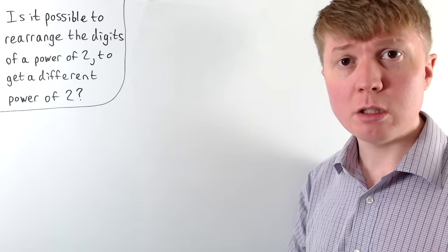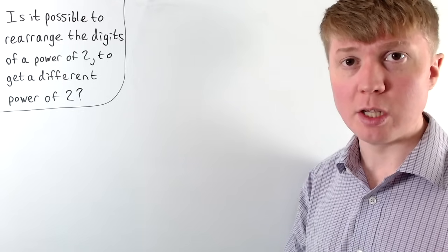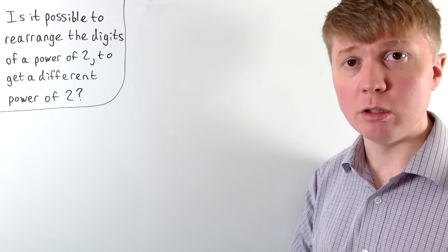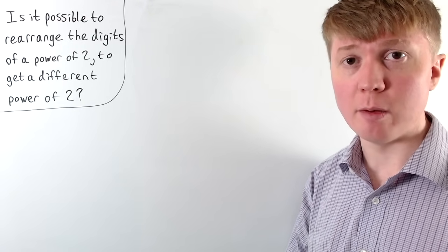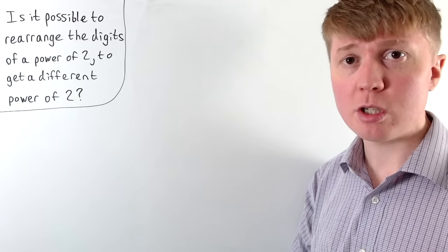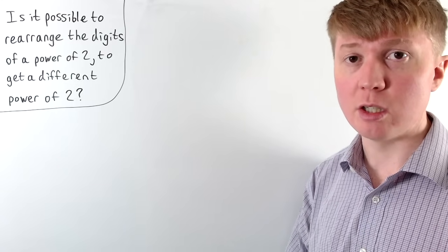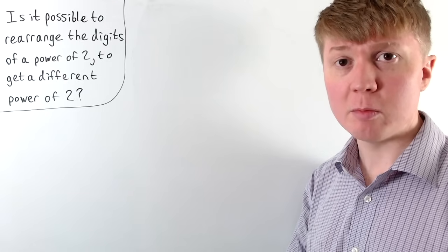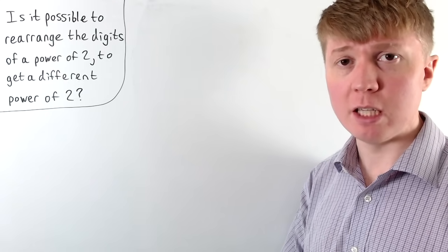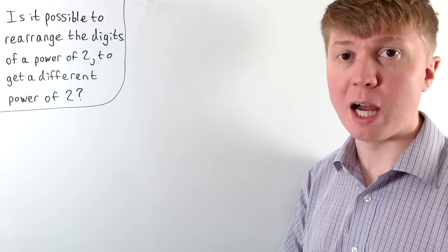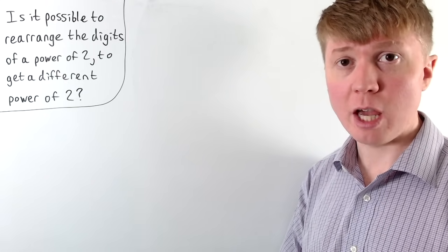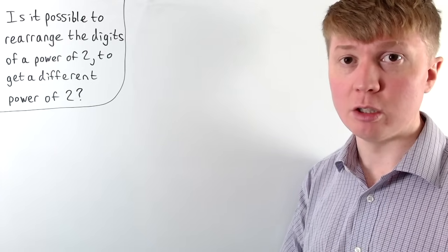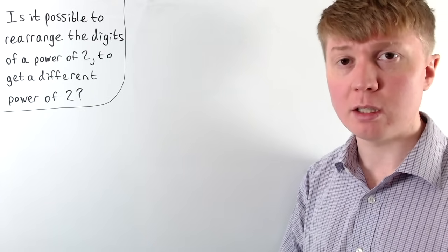The first thing we can do to get a handle on this problem is to notice that if we're just rearranging all of the digits of our number, we aren't going to change what the sum of all its digits is. This gets us thinking about the divisibility by 3 and divisibility by 9 rules, where you can check if a number is divisible by 3 or 9 by looking at its digit sum.